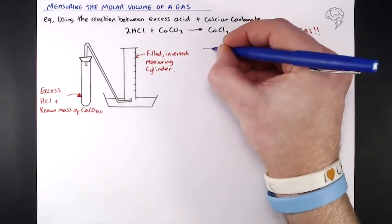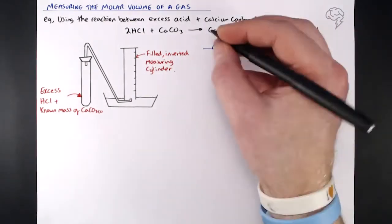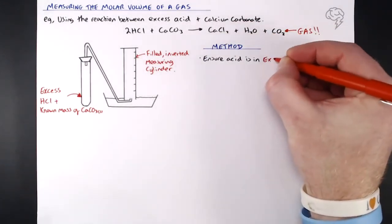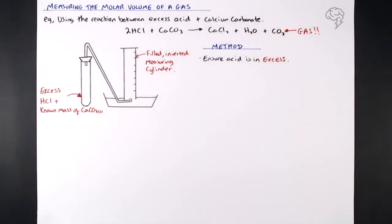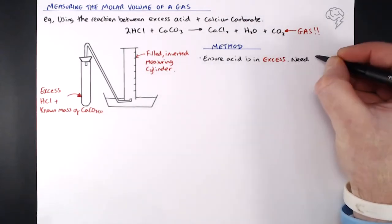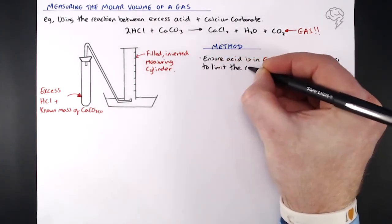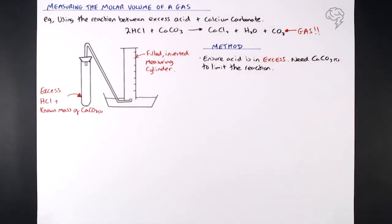In terms of our method, first thing, ensure your acid is in excess. So whatever concentration and volume of acid you put into that boiling tube, make sure it's always more, in terms of number of moles, than calcium carbonate. Make sure there's plenty in there. Look at the stoichiometry, you might need to calculate it as part of an exam, but we need to make sure it's in excess. Why? Because we need the calcium carbonate to limit the reaction.